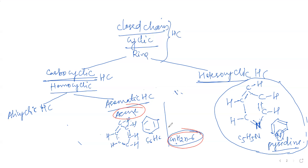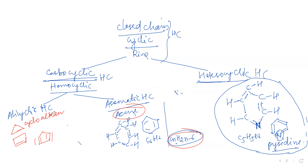Now, a few minutes back you saw three structures. What were those three? They were alicyclic hydrocarbons. The first was cycloalkane, the second was cycloalkene, and the third was cyclodienalkyne.